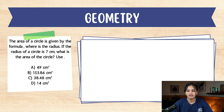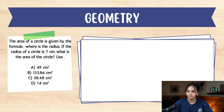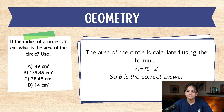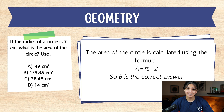Now for our fifth question about geometry. If the radius of a circle is 7 cm, what is the area of the circle? A. 49 cm². B. 153.86 cm². C. 38.48 cm². D. 14 cm². Take a minute to pause the video and find out what your answer is. If you said B, you are correct. The area of a circle is calculated using the formula A = π × r². So B is the correct answer.